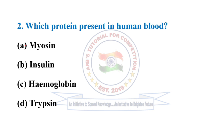Question two: which protein is present in human blood? In human blood, hemoglobin is present. So the correct option is option C.